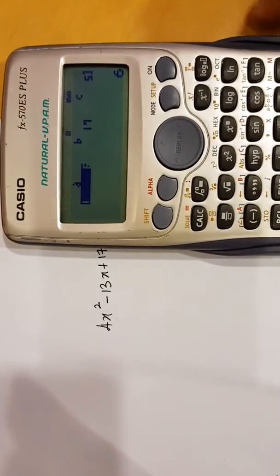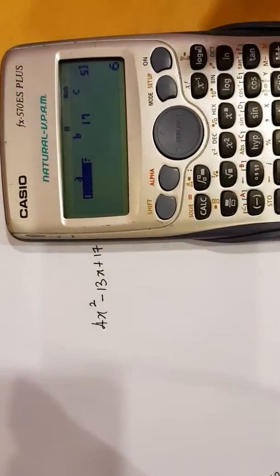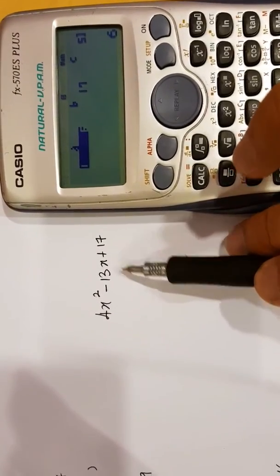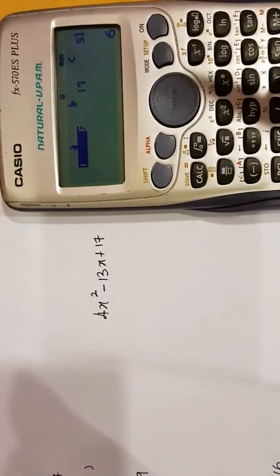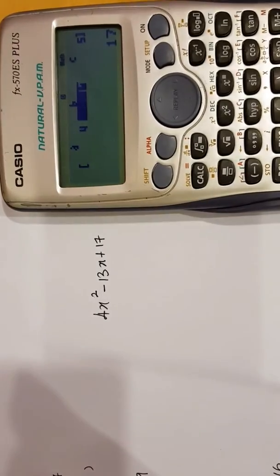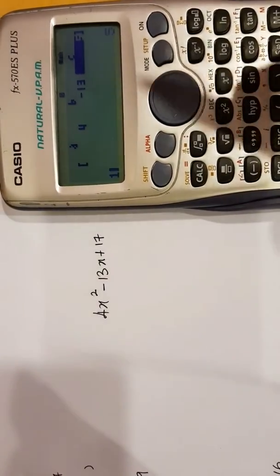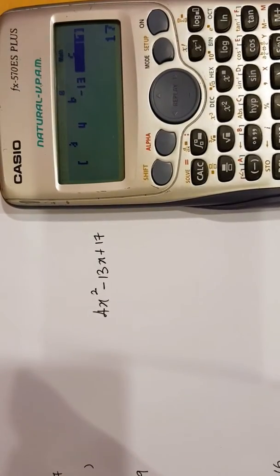Back to the calculator. I'm going to hit AC to get back to that screen. This time, notice A number is 4. B number is negative 13. C number is 17. So, 4 equal negative 13 equal and 17 equal. Equal one more time.